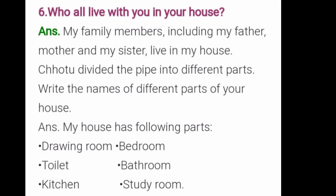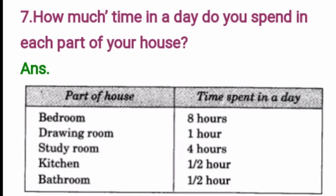Question 7: How much time in a day do you spend in each part of your house? For the bedroom, eight hours — that means for sleeping. Drawing room, one hour. Study room, four hours. Kitchen, half an hour. Bathroom, half an hour. This answer may vary because it depends on how much time you spend in each part of your house.